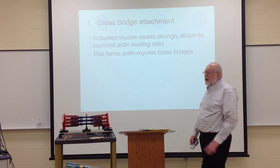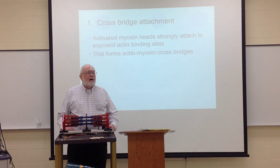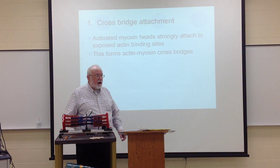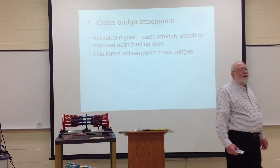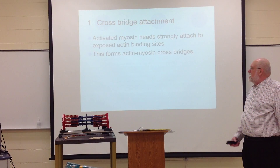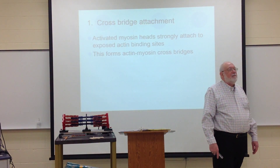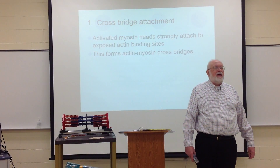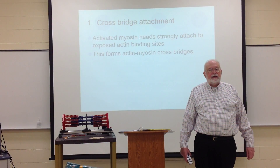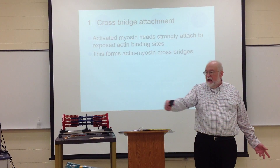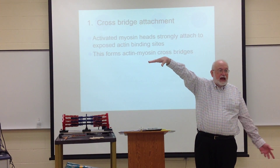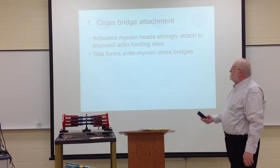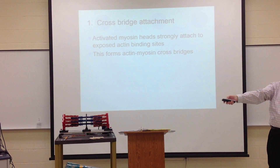There are basically four steps we can describe for this process. Number one: cross-bridge attachment. Cross-bridge formation occurs when a myosin head attaches to an actin molecule at the myosin binding site on actin. So if this actin is a thin filament and here's one of those myosin heads, it's going to come up and attach. That's all there is to cross-bridge attachment — we have this active myosin cross-bridge.